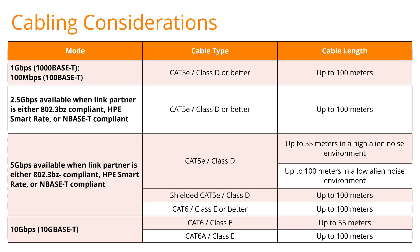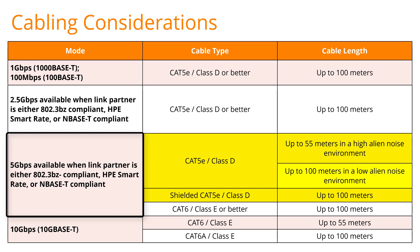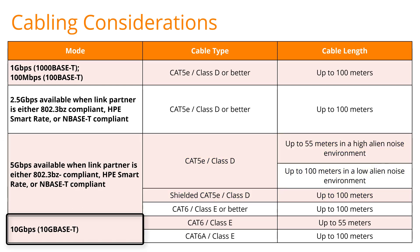Now let's look at cabling considerations. SmartRate delivers 2.5 to 10 times more bandwidth from existing cable infrastructure without expensive and disruptive cable upgrades. This table outlines the highest speed available based on cable type. Notably, up to 5 gigabits per second can be achieved with CAT 5e cables up to 55 to 100 meters, which is the most common cabling in most LAN environments. For 10 gigabits per second, up to 55 meters can be achieved with CAT 6 cabling, while CAT 6a cabling supports 10 gigabits per second up to 100 meters.